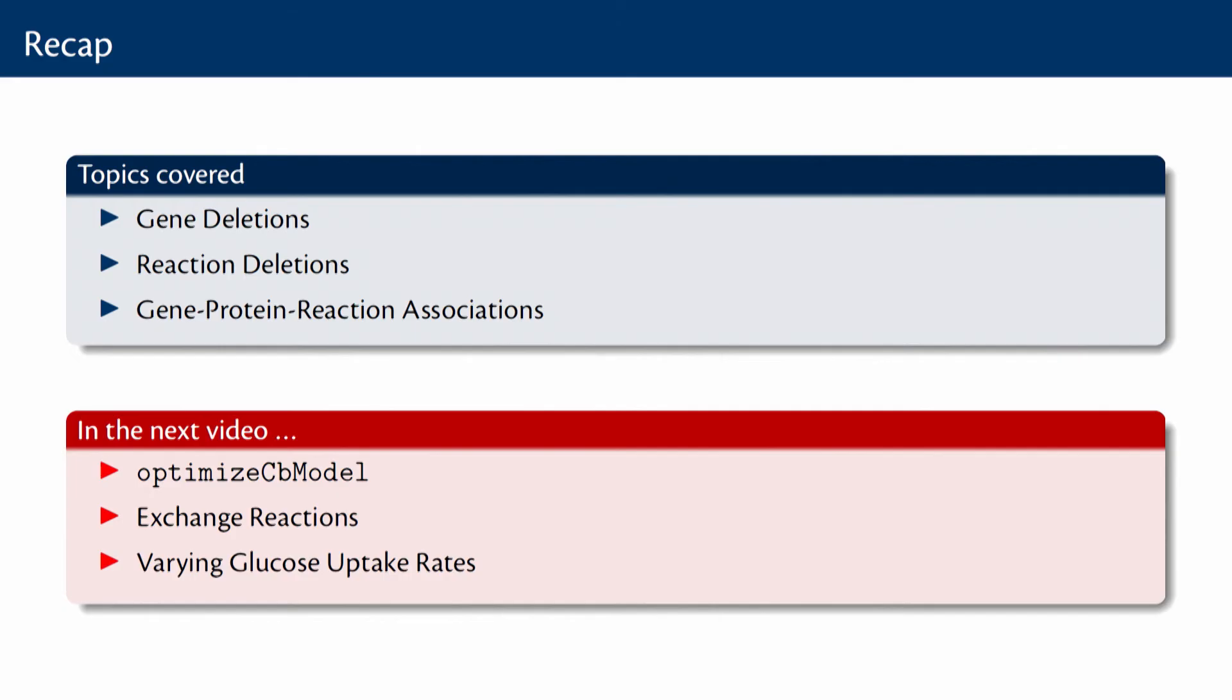So in this video, we had an overview of how we perform gene deletions or reaction deletions, how do we set up that as an optimization problem. And we also understood that there is a correspondence between genes and reactions which is usually captured via the gene-protein-reaction associations. This is important to know what genes can be deleted or what genes need to be deleted when you want to turn off a reaction and vice versa.